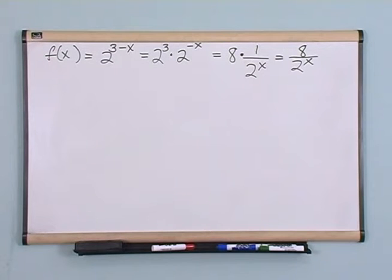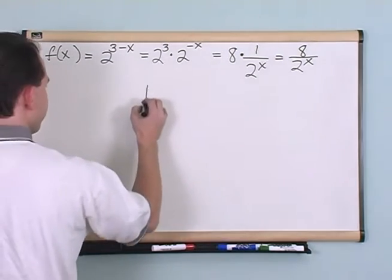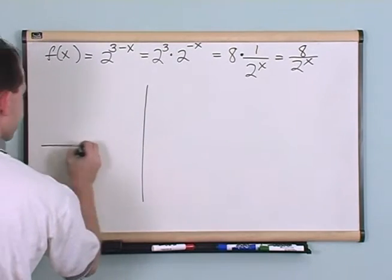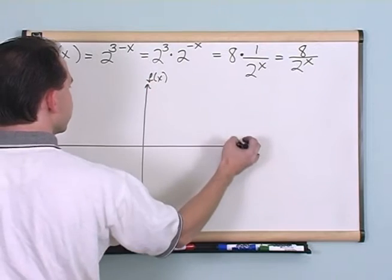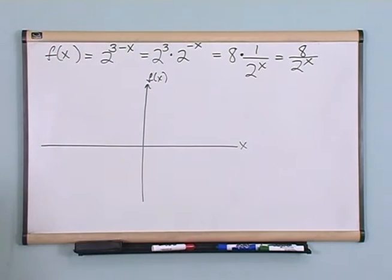Okay, so how would you graph that? This is f(x), this is x. How would you graph that?